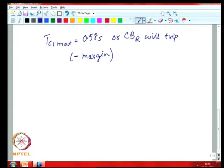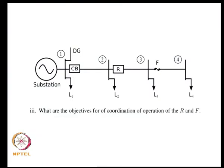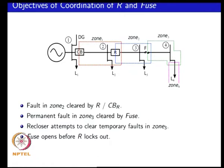The next problem is to look at the objectives of coordination of the recloser and the downstream fuse. If you have a fault in zone 2, it has to be cleared by the recloser or its underlying circuit breaker. If you have a permanent fault in zone 3, it has to be cleared by the fuse. Whereas if you have a temporary fault in zone 3, the recloser attempts to clear it, but before the recloser locks out the fuse has to blow. This is the requirement for coordination between the recloser and the downstream fuse.